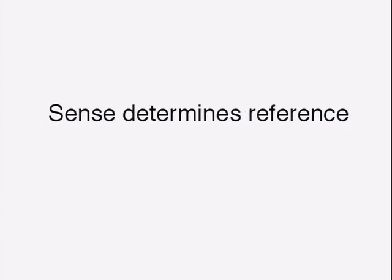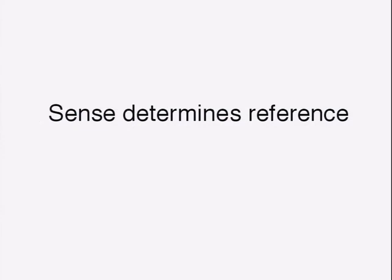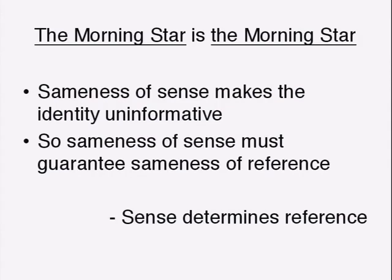Then Frege's move is to say: sense is what fixes reference. The thing that explains informativeness is what hooks up the sign to the object — that's how the sign is tied to the object, by being associated with a sense. When you take the morning star as the morning star, sameness of sense is what makes that identity uninformative. If you have the same sense both times, it's got to be the same object. So sense has got to be fixing reference.